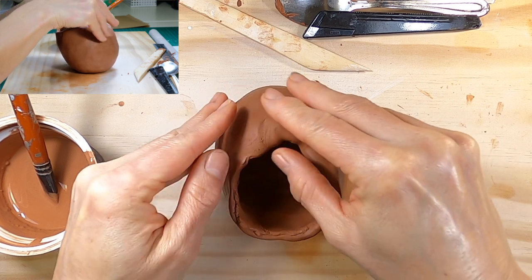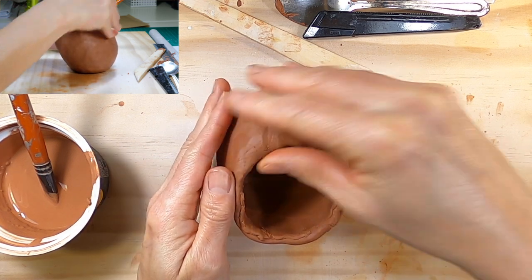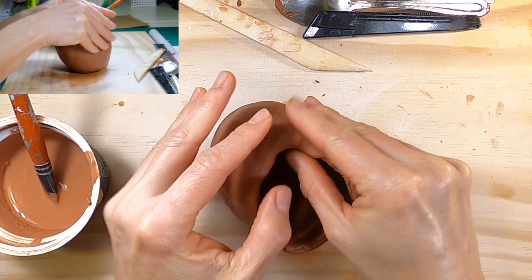Now I'm rolling the top lip over, because for this project I need the top lip to be reasonably thick so I can add the rope detail.